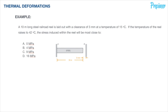This is going to be what is called a partially constrained element, because as you can see, this steel railroad reel is actually going to have some room to expand until finally it hits some constraint at some length away.